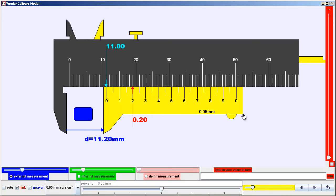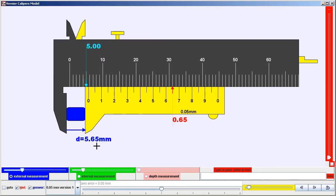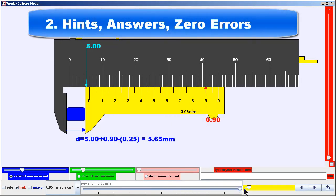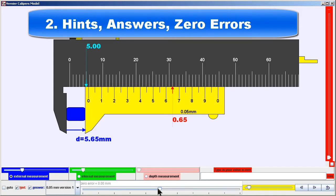As you can see from the external measurement, the student will need to clamp it in. Also, the introduction of zero errors, which is not easily found in most other simulations, but we argue this is critical to understanding micrometers as well as vernier calipers.